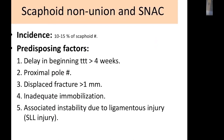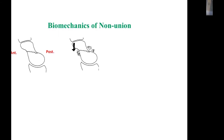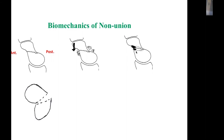Regarding scaphoid non-union, 10 to 15 percent of scaphoid fractures can progress to non-union due to poor blood supply of the scaphoid. Other contributing factors include delay in treatment, proximal pole fractures, displaced fractures, inadequate immobilization, and associated instability. The problem with scaphoid non-union is that the scaphoid has a flexion moment due to its oblique position, leading to attritional changes on the volar part and the characteristic humpback deformity.